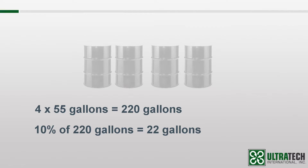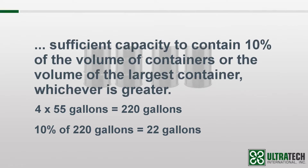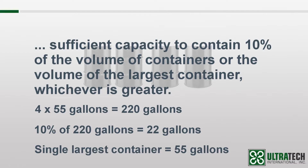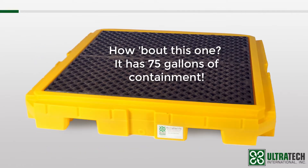But before we start shopping for a 22-gallon spill pallet, we need to look at the rest of the regulation. The second part says: or the volume of the largest container, whichever is greater. In this scenario, we have four 55-gallon drums, so the single largest container would be 55 gallons. 55 is greater than 22, so you would need to have a spill containment unit with at least 55 gallons of containment to be in compliance.